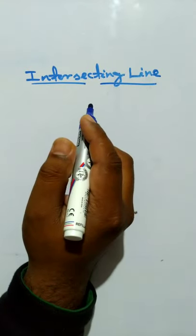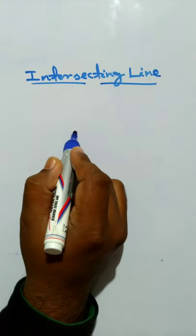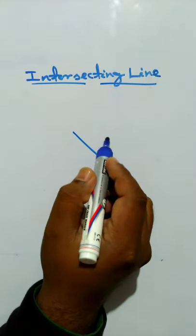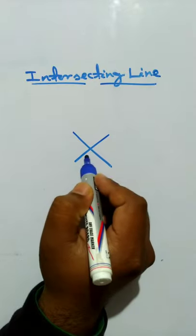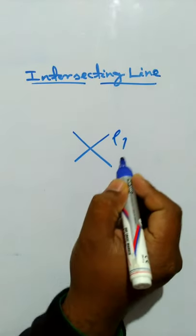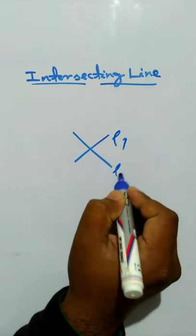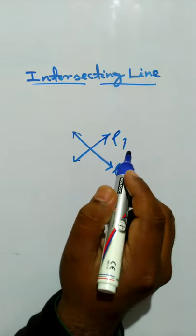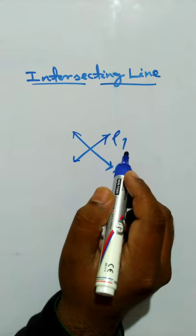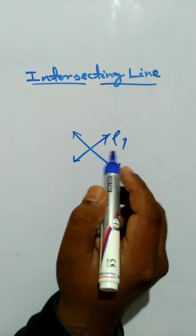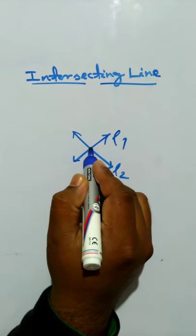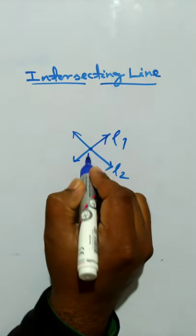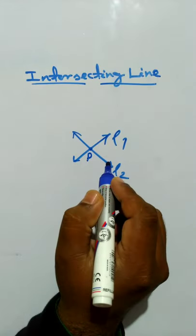First, draw a line, then draw another line. Name the lines L1 and L2. Both lines L1 and L2 pass through one common point. Name that point P.